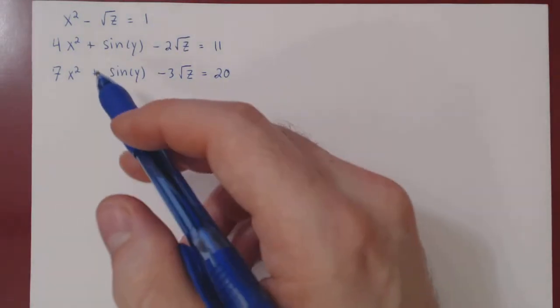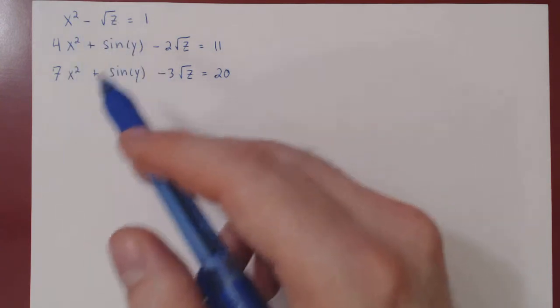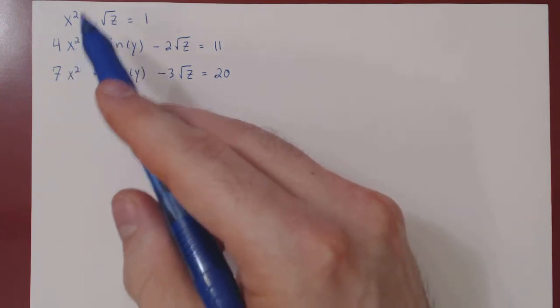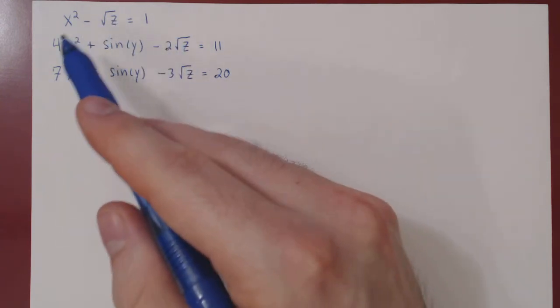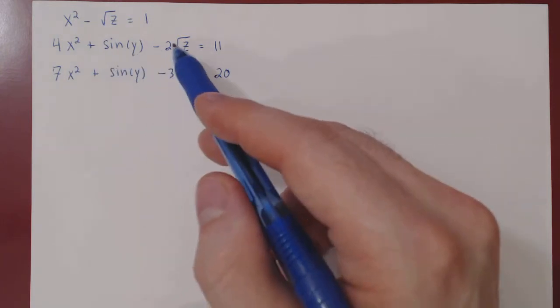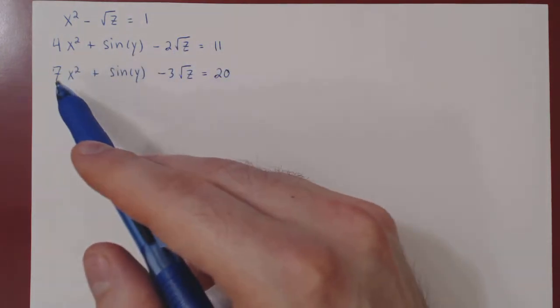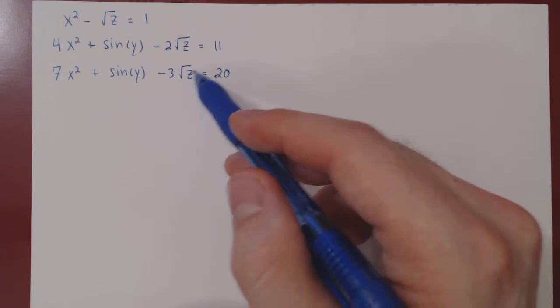Okay, so consider the following system of equations. x squared minus root of z equals 1, 4x squared plus sine of y minus 2 root of z equals 11, 7x squared plus sine of y minus 3 root of z equals 20.